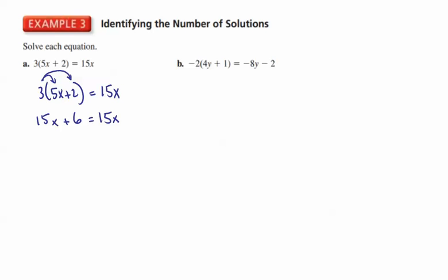6 more than a number is equal to the number, and that shouldn't normally make sense. But what we can do is subtract 15x on both sides, and I end up with 6 is equal to 0. And 6 is never equal to 0, so we say this is never true. What that means is that no matter what value I substitute for x, I can never make the left side of this equation equal the right side, and so there are no solutions.